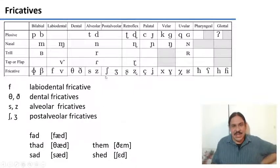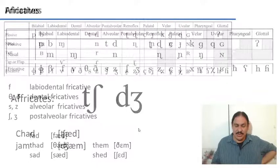And shed has the esh, post-alveolar esh, shed right here. So those are the fricatives.